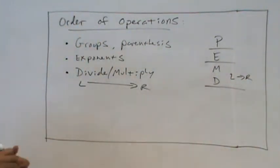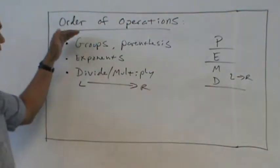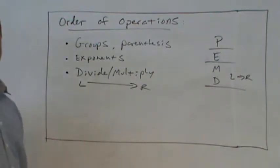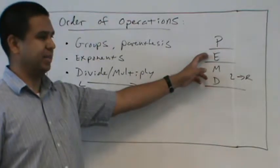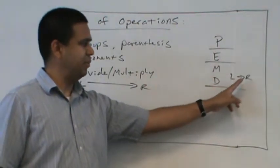So when we get to multiplication and division, we go left to right. So as soon as we're done writing the steps, we'll do a couple examples. So first, parentheses. Then exponents. Then divide or multiply from left to right.